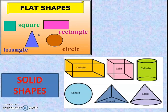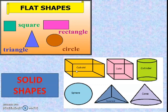Now let's recall the flat shapes and solid shapes. Flat shapes are square, rectangle, triangle, and circle. Solid shapes are cuboid, cube, cylinder, sphere, pyramid, and cone.